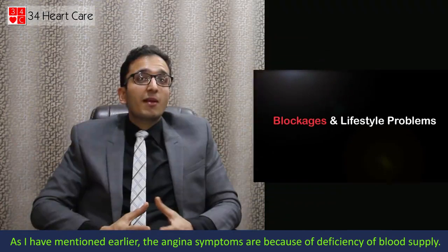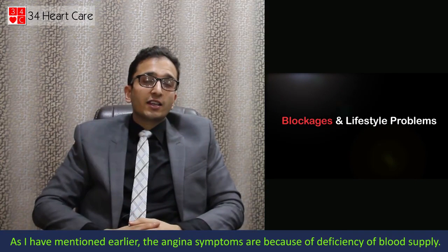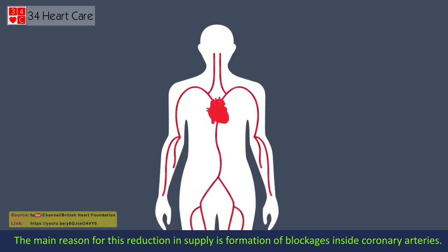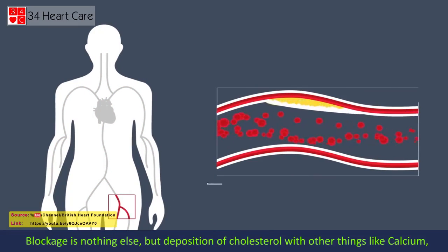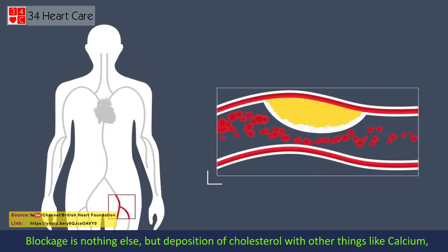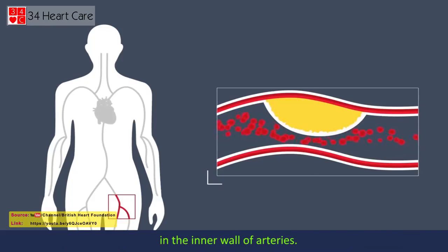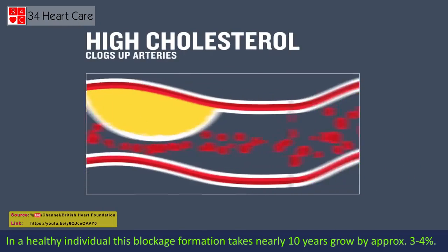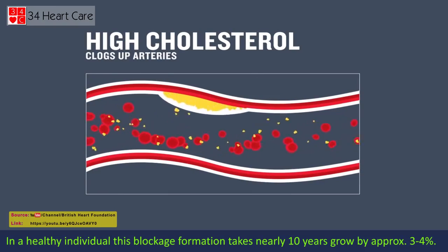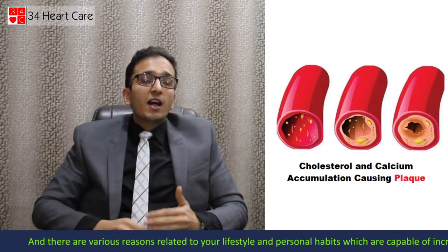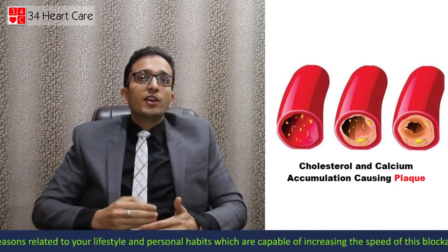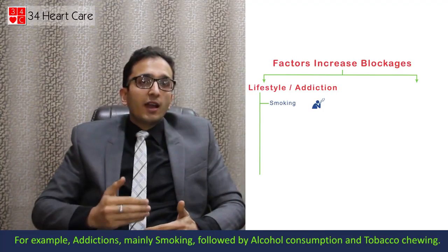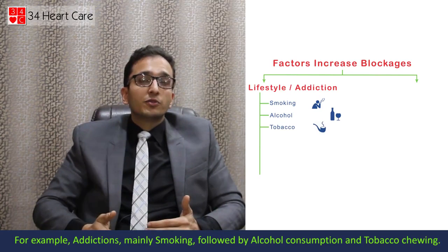The angina symptoms are because of deficiency in the blood supply. The main reason for this reduction in supply is the formation of blockage inside coronary arteries. Blockage is nothing else but deposition of cholesterol with other things like calcium in the inner walls of the arteries. This process of blockage formation is very slow — in a healthy individual it takes nearly 10 years to grow by approximately 3 to 4 percent. There are various lifestyle and personal habit factors capable of increasing the speed of this blockage formation, for example addictions, mainly smoking, followed by alcohol consumption and tobacco chewing.